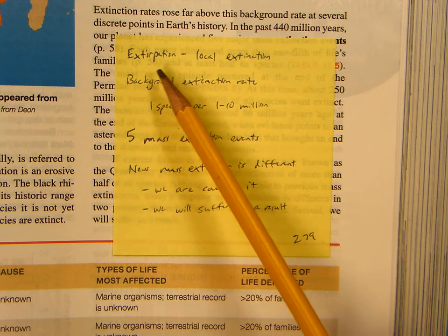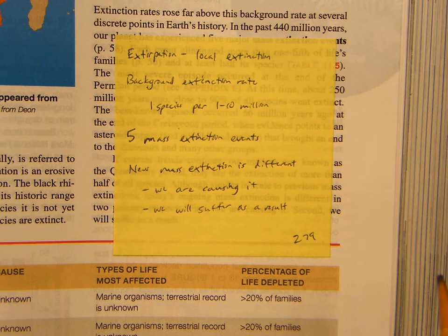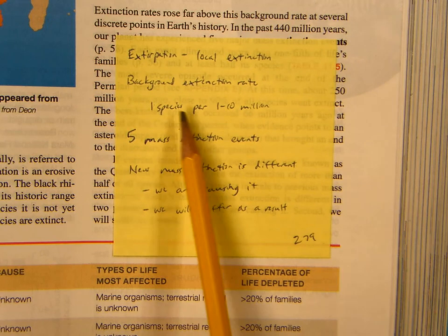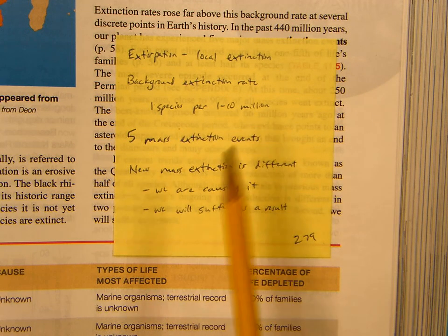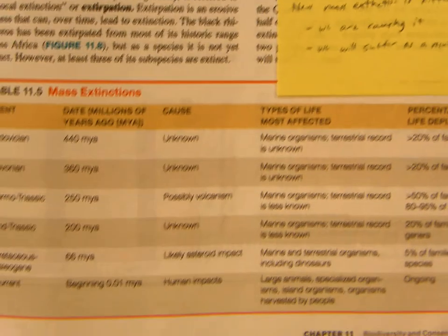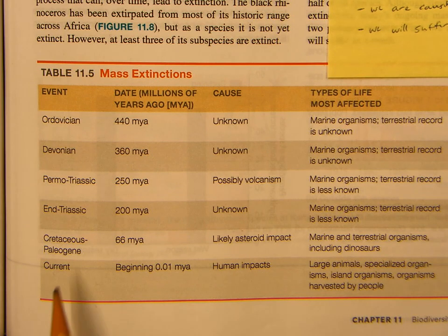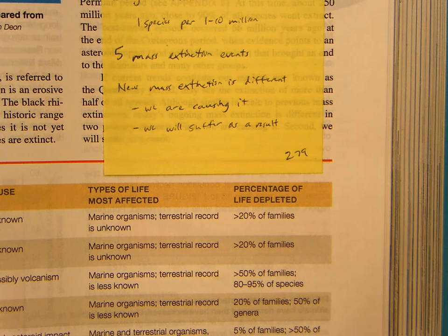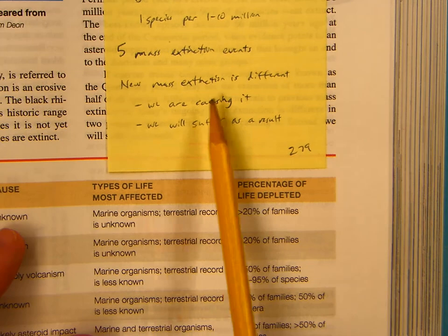There's a thing called extirpation, which is a local extinction. This can over time lead to full-blown extinction of the species entirely — not just 'they used to live here and now they don't,' but they're gone from Earth completely. The background extinction rate has typically been one species per every one to ten million species — that's what we're shooting for. There have been five mass extinction events in history, all listed in order. The Cretaceous event is the one everybody knows because of the asteroid. The new sixth mass extinction we're causing is different — not only are we causing it, but we are going to suffer from it as a result, which is unique because typically it's not a species causing its own demise.